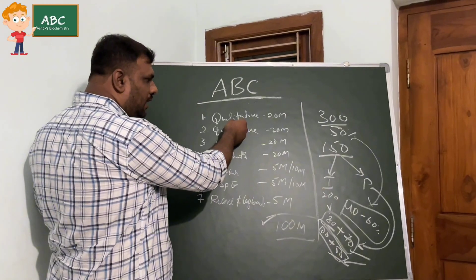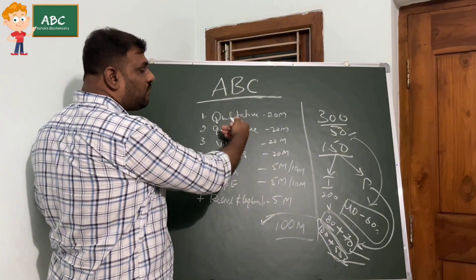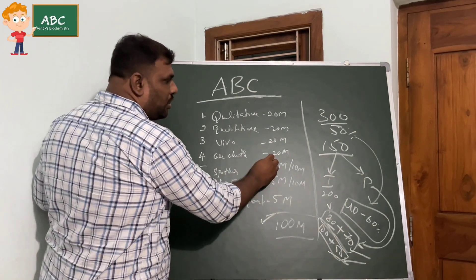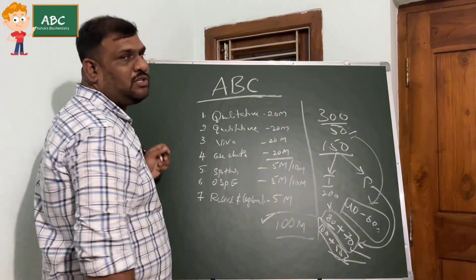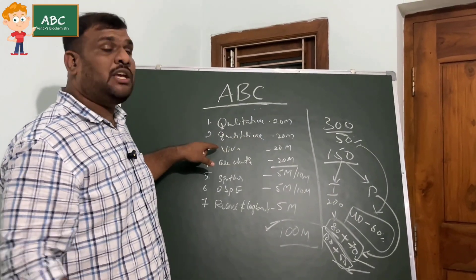In the 100 marks there will be a major contribution and minor contribution. Coming to the major contribution, you'll be having qualitative, quantitative, viva, and case charts. Why am I telling these four as major contribution? Each of them carries 20 marks. Your qualitative will give you 20 marks, your quantitative will give you 20 marks.